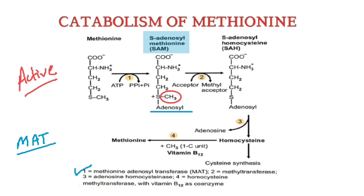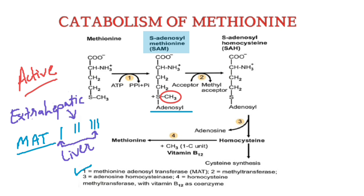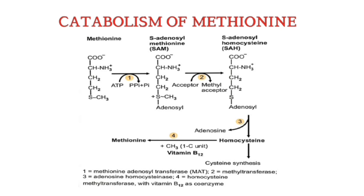MAT exists in three isoenzyme forms: MAT1, MAT2, and MAT3. While MAT1 and MAT3 are present in liver, MAT2 is located in extrahepatic tissues. Due to the stable nature of methionine's thioether linkage, it cannot easily react with other molecules.